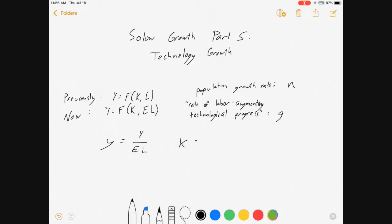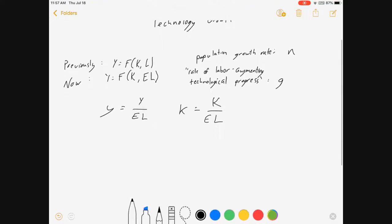And we're going to have a little k, which is equal to big K over effective labor. And because we have constant returns to scale, we have that y is equal to some function f of little k.